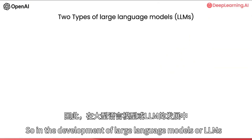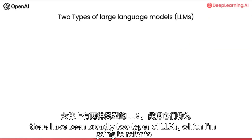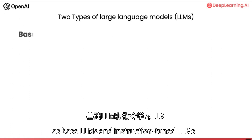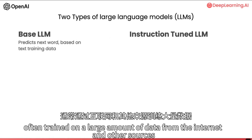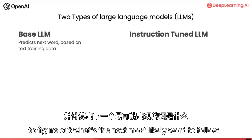In the development of large language models or LLMs, there have been broadly two types of LLMs, which I'm going to refer to as base LLMs and instruction-tuned LLMs. A base LLM has been trained to predict the next word based on text training data, often trained on a large amount of data from the internet and other sources to figure out what's the next most likely word to follow.